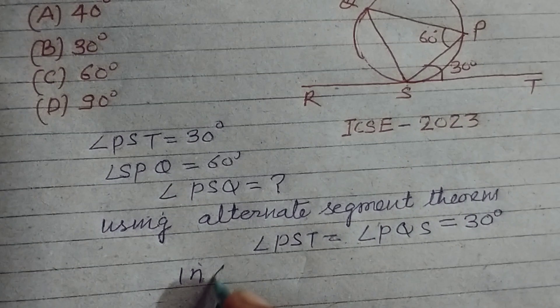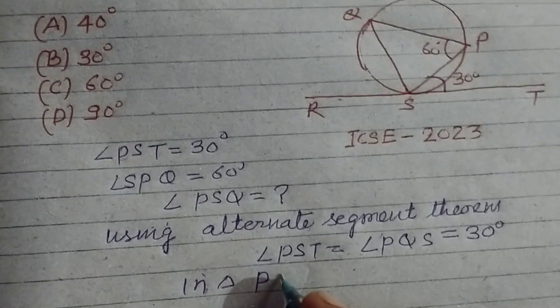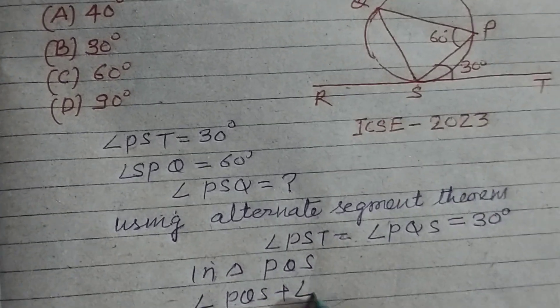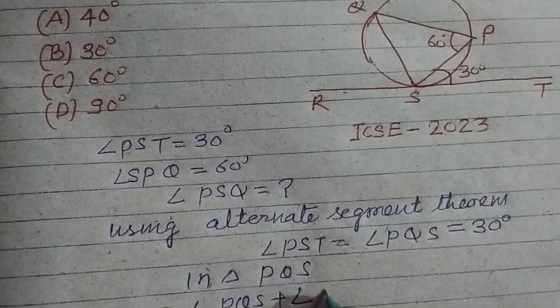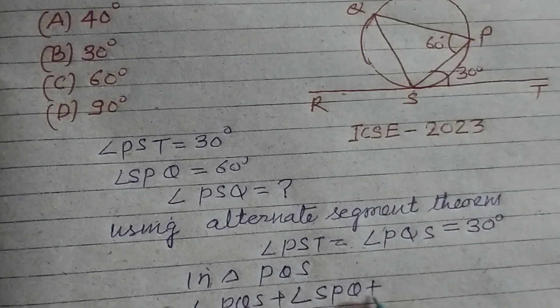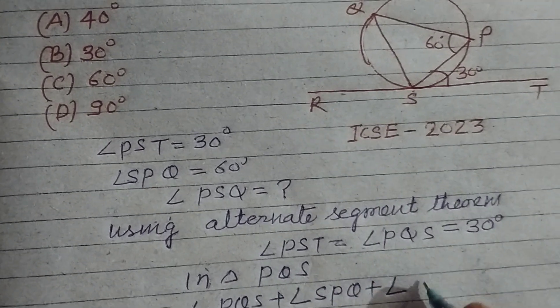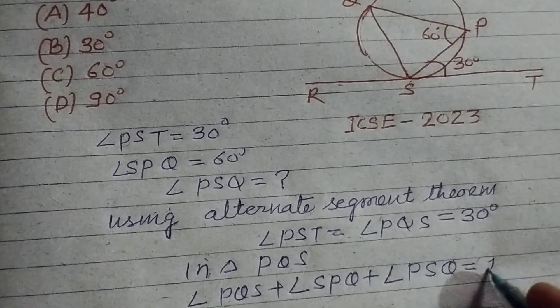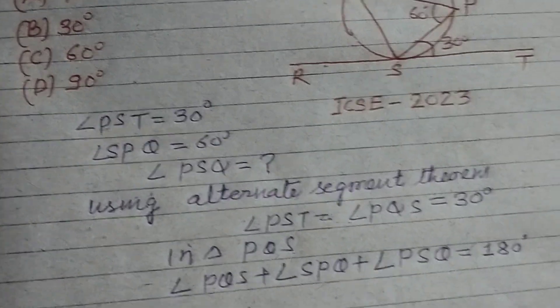Now in triangle PQS, angle PQS plus angle SPQ plus angle PSQ equal to 180, using angle sum property.